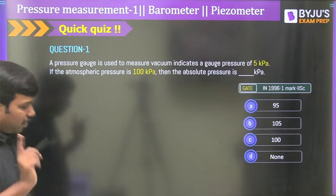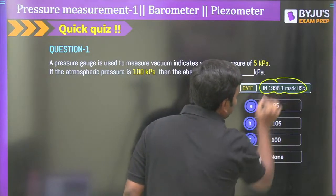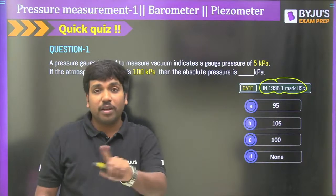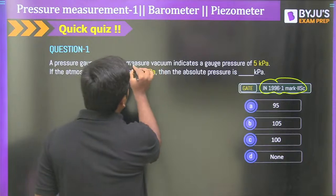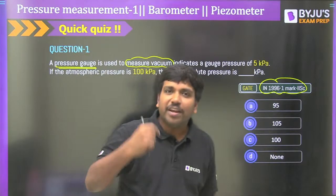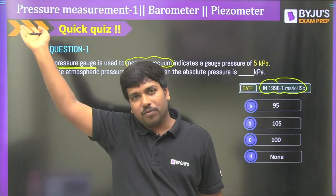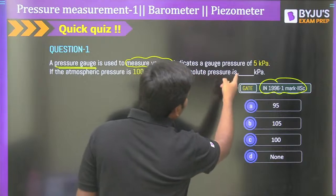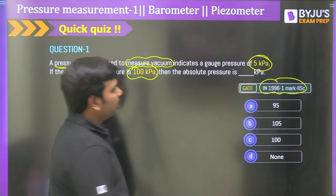This question was asked in GATE 1996 for one mark by IISc Bangalore, and similar questions were asked in BARC and ISRO. The question: a pressure gauge is used to measure vacuum, and it indicates a pressure of 5 kilopascals. If the atmospheric pressure is 100 kilopascals, what would be the absolute pressure? Four options are given.